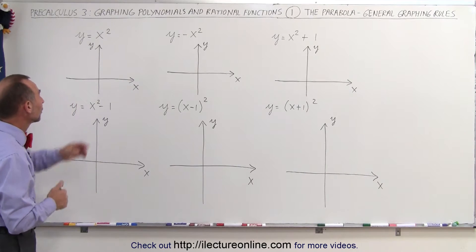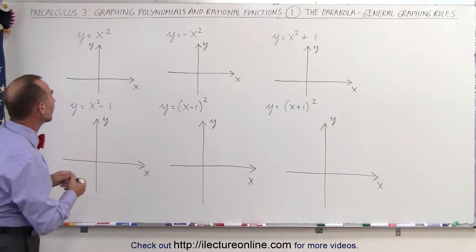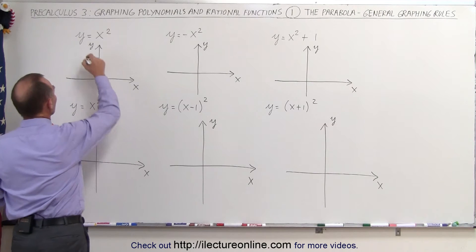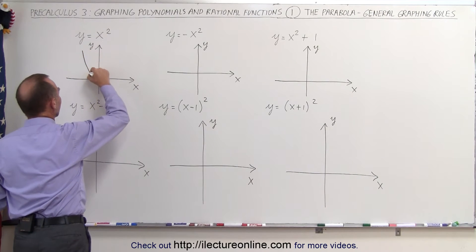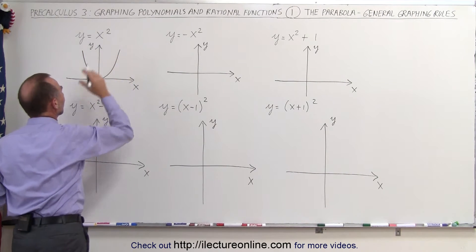y equals x squared. If we're going to graph y equals x squared, that is a parabola, a second-order equation, and it looks like this, with the vertex right at the origin. So it's a very simple graph.